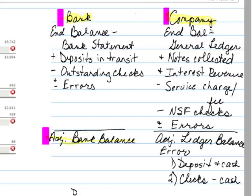For our company side, we have that ending balance that shows in the general ledger for our cash. To that, we will add any notes that were collected by the bank for us, which we find out about from the statement that comes with the bank. We see that there would potentially be interest that we have earned for allowing someone else to use our money, so that would be interest revenue. Sometimes there is a charge by the bank or a fee for services — if they've collected any notes for us, there is going to be a charge of some kind.